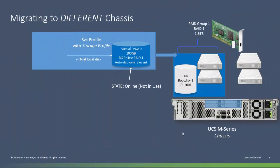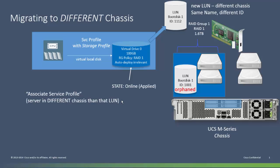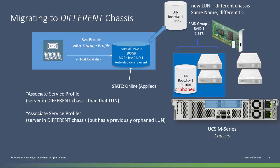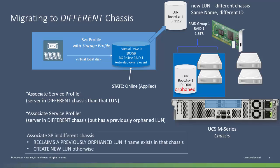If I move a service profile to a different chassis, there's a bit of unexpected behavior. Here's a service profile that was associated with a server in a particular chassis with a particular LUN, and now it's disassociated — the LUN isn't orphaned at that time. When I associate it with a server in a different chassis, the old disk gets orphaned and a new LUN in the new chassis with a different ID but the same name as the original disk gets created. The content does not get copied over — it's just a new disk. What happens if I move it back? It's going to go back and automatically reclaim that other disk based on the name — this is the only thing automatically done in UCS Manager based on disk name. So the new one would get orphaned and you'd flip back to the old one and get your content back.